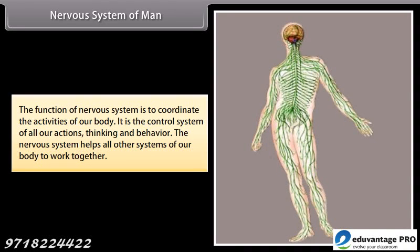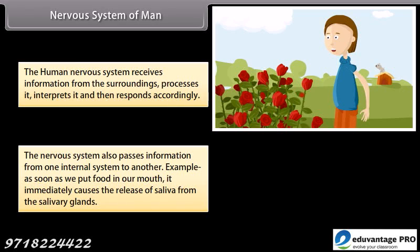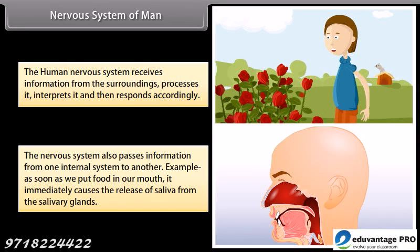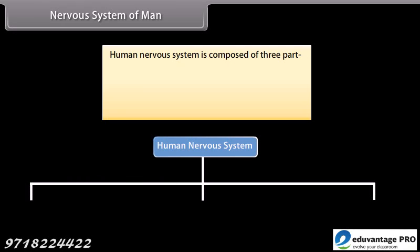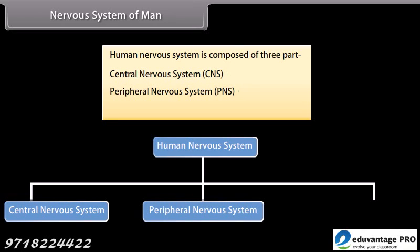The function of the nervous system is to coordinate the activities of our body; it is the control system of all our actions, thinking, and behavior. The nervous system helps all other systems of our body to work together. The human nervous system receives information from the surroundings, processes it, interprets it, and then responds accordingly. It also passes information from one internal system to another — for example, as soon as we put food in our mouth, it immediately causes the release of saliva from the salivary gland.